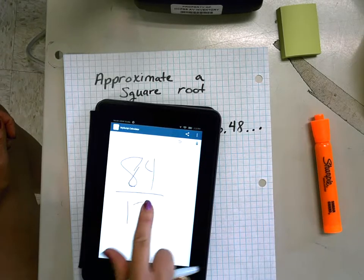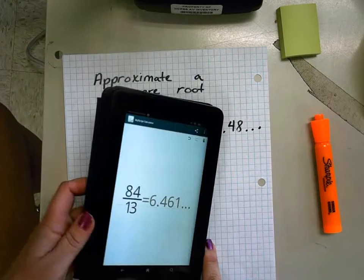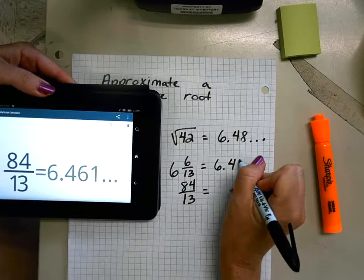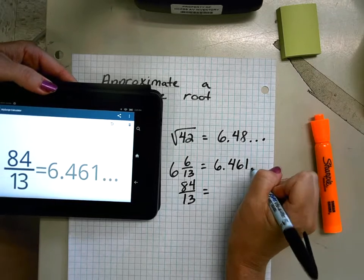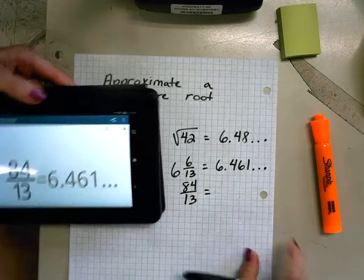Look at that! Six and forty-six, four hundred sixty-one thousandths repeating. Super duper close, very very good.